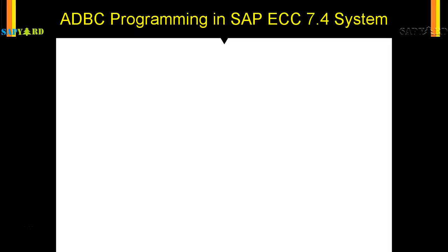In the previous video, we wrote an ADBC program in ECC6. We used all the old syntaxes which are available, but we did not use the new syntaxes available after 7.4. In this section, we will convert the same program in an ABAP 7.4 system using all the new syntaxes. We will do some inline programming, and you would realize that programming in the new 7.4 and above system is much easier than its previous counterparts. It not only reduces the number of lines of code, but also increases the readability of the program. Also, we will connect to the backend ABAP 7.4 system from our HANA studio, so we will be writing our code in the ADT. So let's begin.